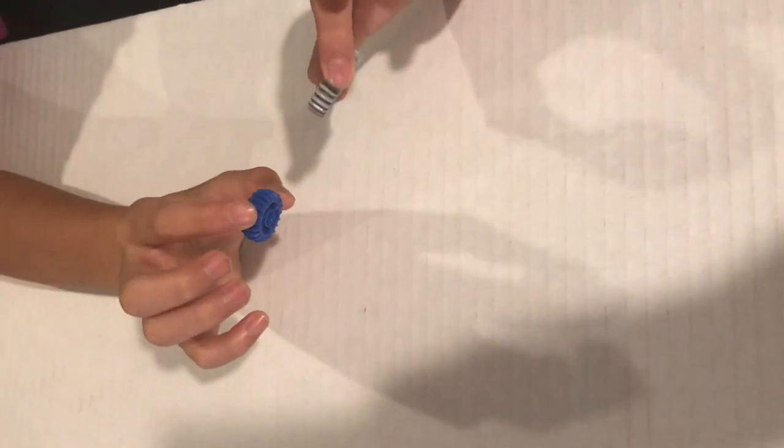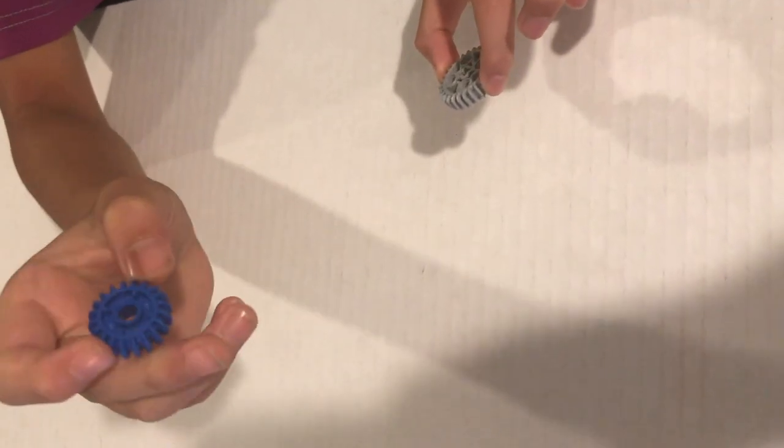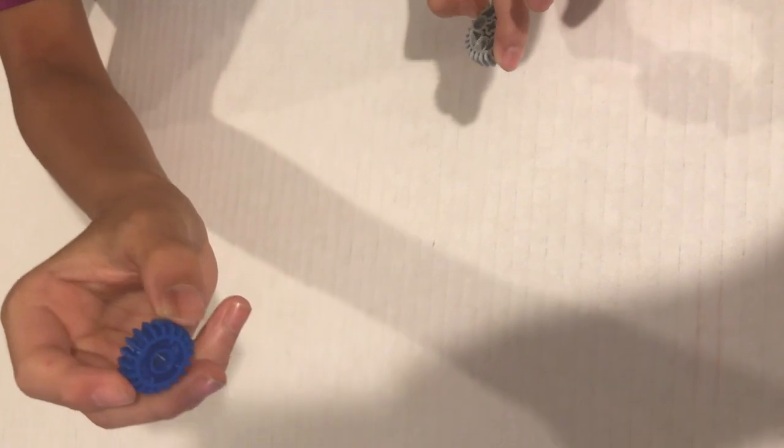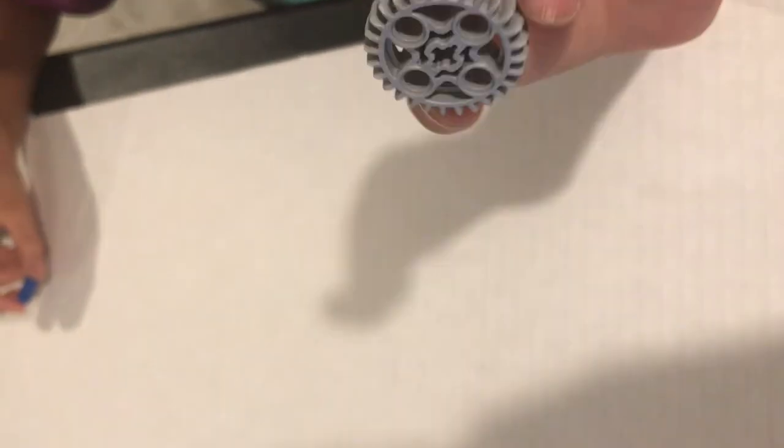These are the new Spike Prime gears. This is a double bevel 20 tooth gear. It has a round pinhole instead of an axle hole and can only be driven by clutch teeth. This is a 28 tooth double bevel gear.